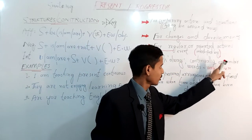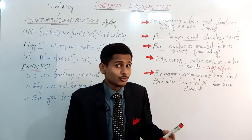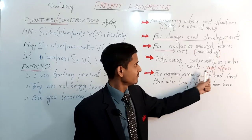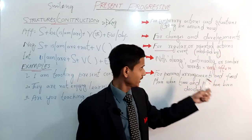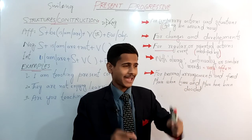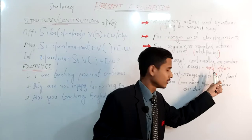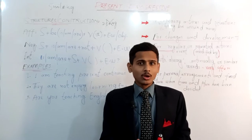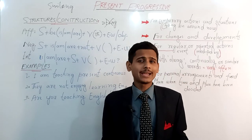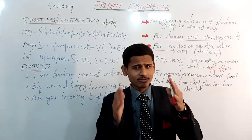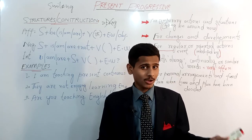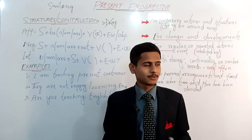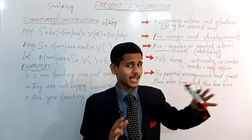Similarly, with adverbs like 'always,' 'continually,' and similar words, we use present continuous tense to mean something happens very often. In those sentences we add 'always,' 'continually,' or similar adverbs. For example, 'You are always lying' — meaning you very often lie whenever your father asks where you have been. Both usages are slightly similar but they do have a difference.